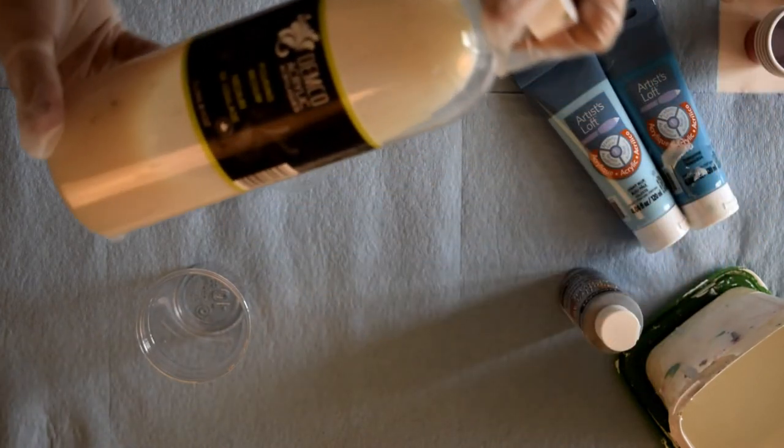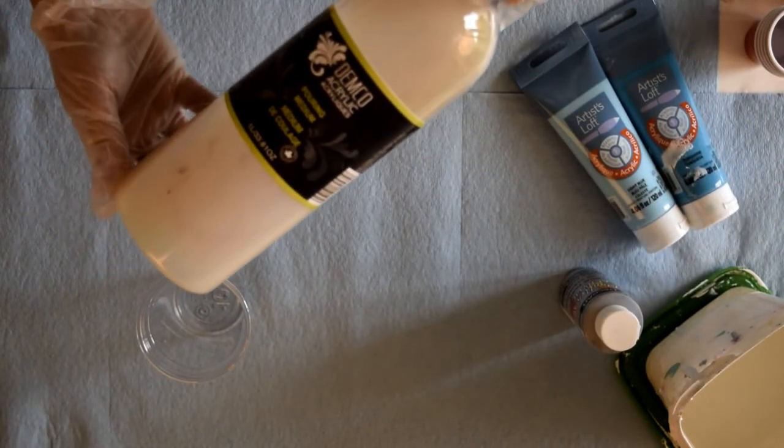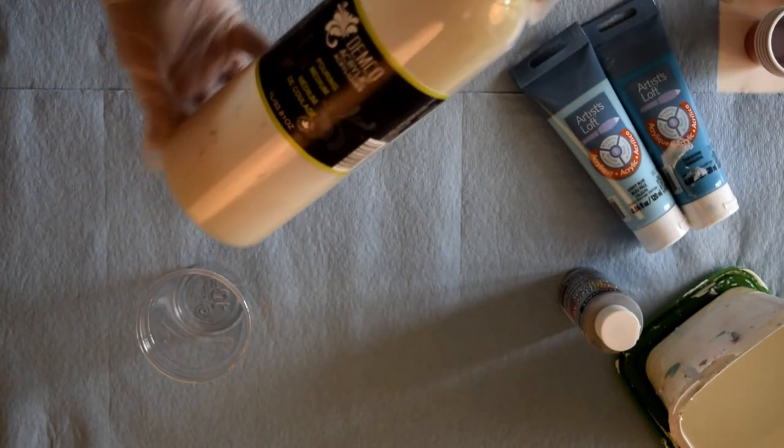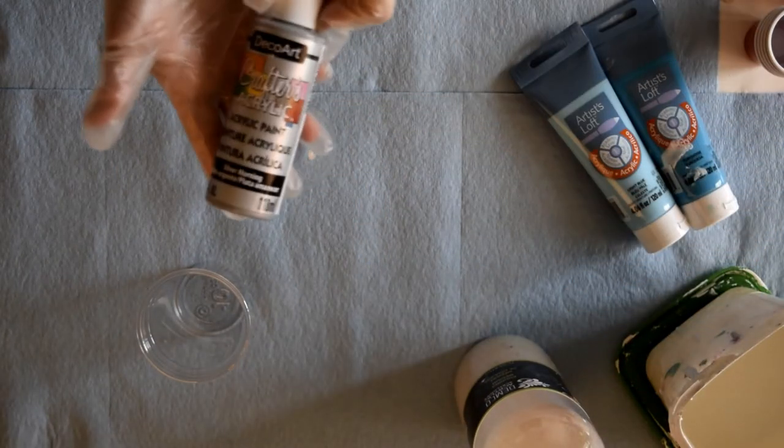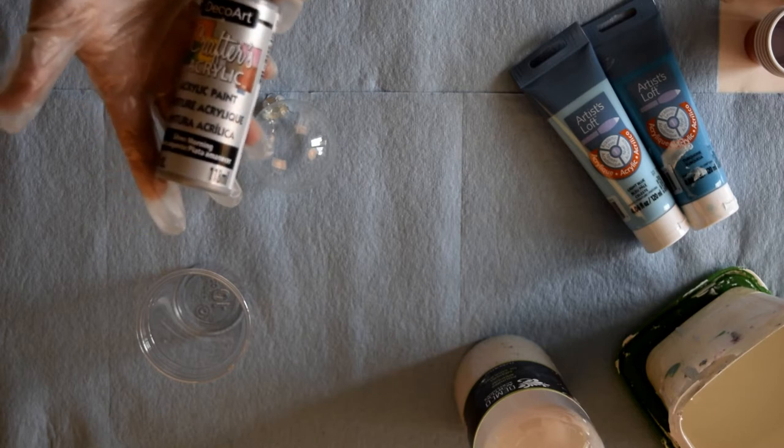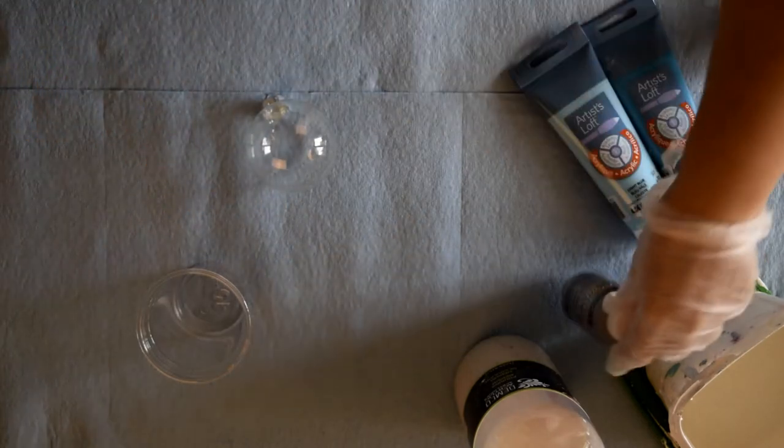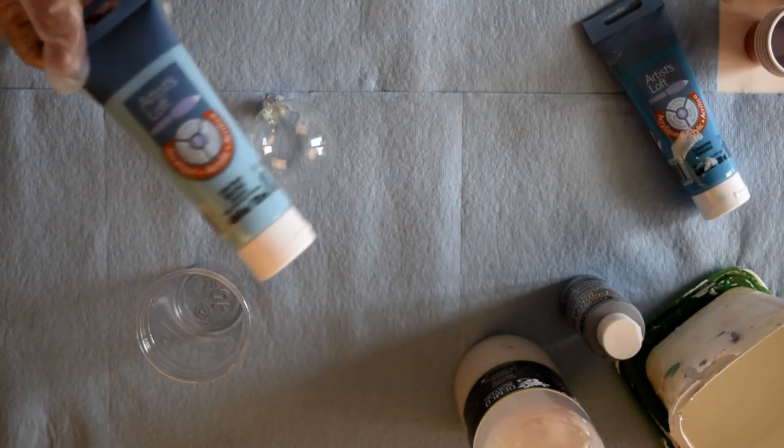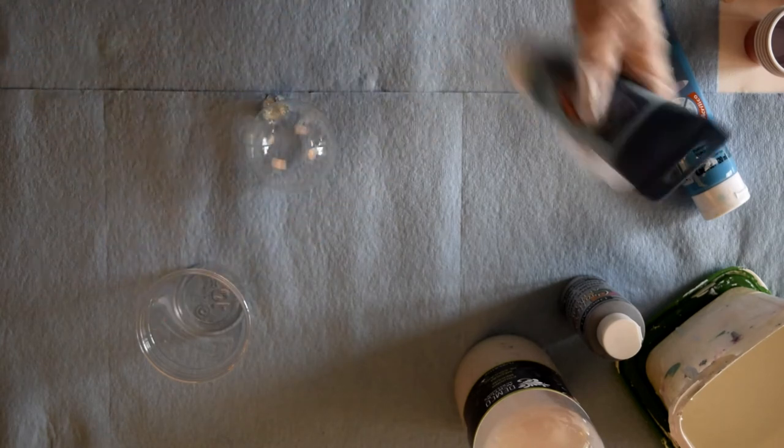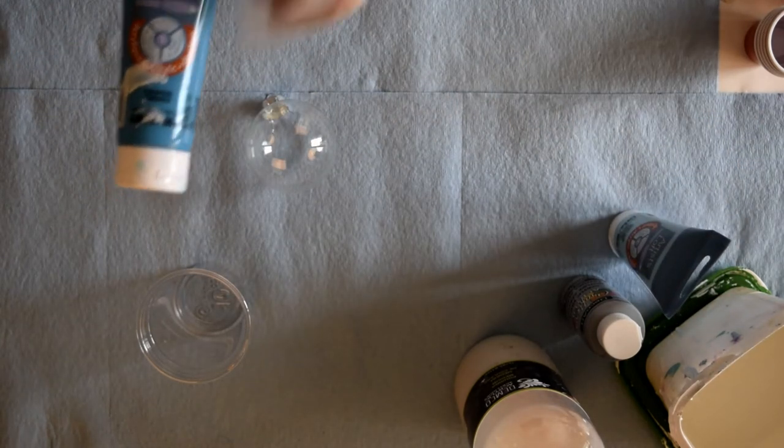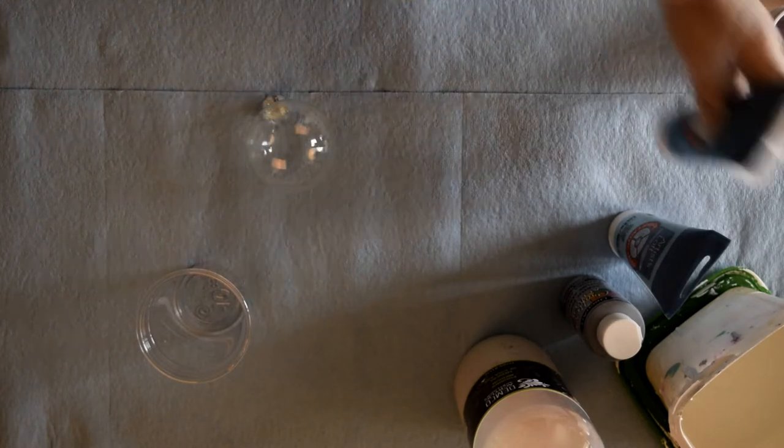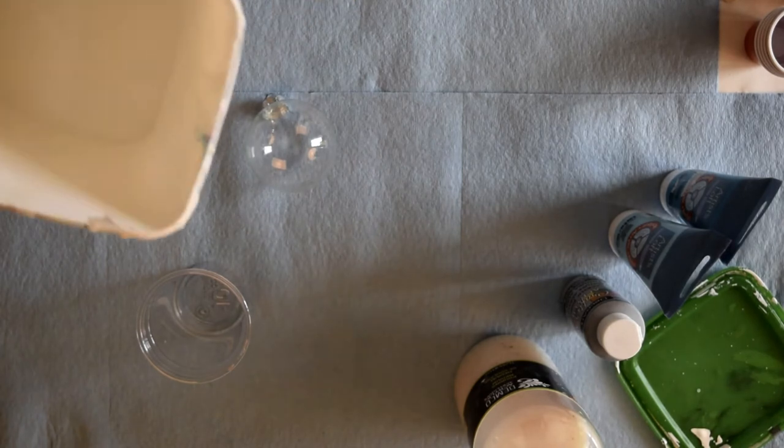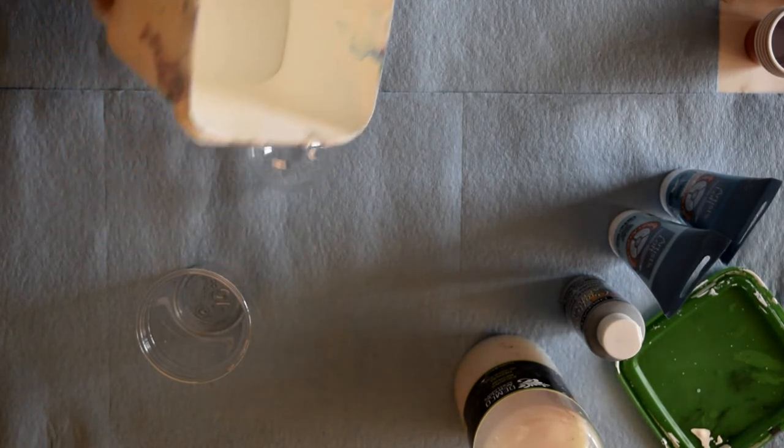So today I'm going to be using some pouring medium. This is Demko acrylic pouring medium. I get that at Michael's. This is a crafters acrylic and this is a silver metallic. And this is Artist Loft acrylic paint. It's light blue, also from Michael's. And this is a turquoise, also Artist Loft acrylic from Michael's as well. And this is just regular house white paint that I have. I always have some on hand for different projects.